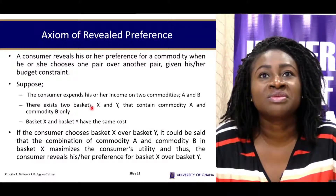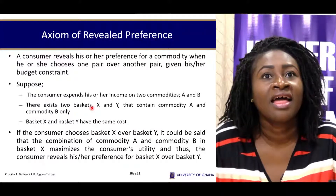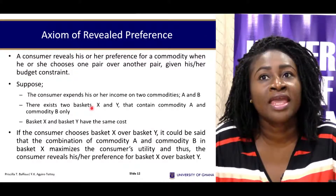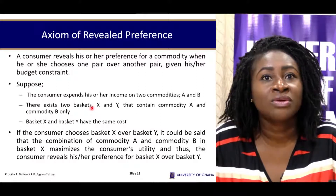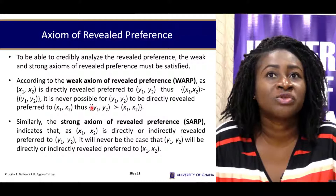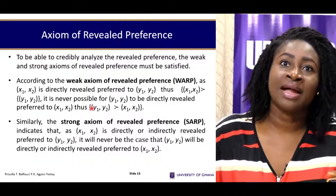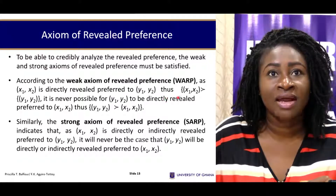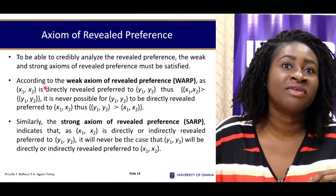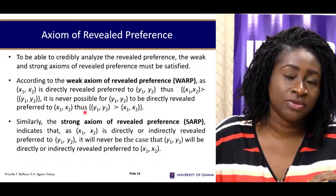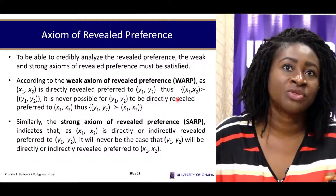In terms of the axioms, the consumer reveals his preferences by choosing one pair of commodities over another. If the consumer spends income on two commodities A and B, there exist two bundles X and Y. The weak axiom of revealed preference states: if (X1, X2) is directly revealed preferred to (Y1, Y2), it will never be possible for (Y1, Y2) to be directly revealed preferred to (X1, X2) — just as if A is preferred to B, B will never be preferred to A.